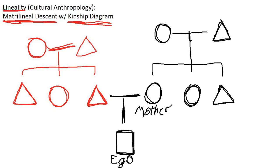Now, in a matrilineal descent system, your mother's sister, who in our system would be called the aunt, in a matrilineal descent system, that is not considered an aunt, that is also mother.